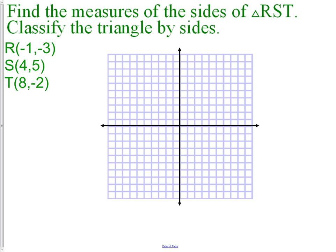First thing we need to do is graph it. We have the points R, which is at (-1, -3). We have point S, which is at (4, 5).